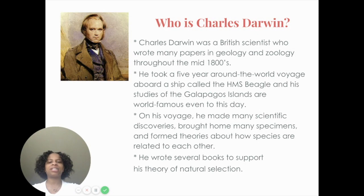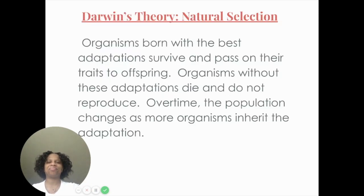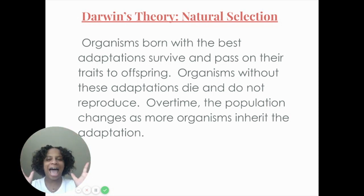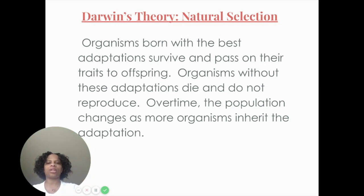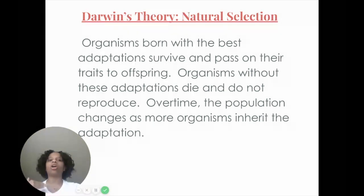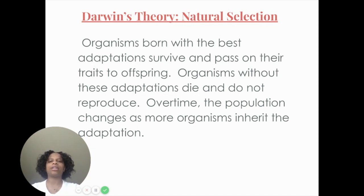On his voyage Darwin made many scientific discoveries, brought home many specimens, and formed theories about how species are related to each other. He wrote several books to support his theory of natural selection. Darwin's theory: organisms born with the best adaptations survive and pass on their traits to offspring. Organisms without these adaptations die and do not reproduce. Over time, the population changes as more organisms inherit the adaptation.